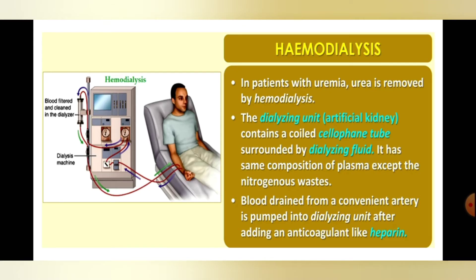Now, what is hemodialysis or dialysis? It is the process where purification of impure blood is done using a dialyzing unit, in persons who have kidney failure. 'Hemo' means blood; dialysis means clearing or cleaning of the blood. In patients with uremia — a condition where urea remains in the blood — urea is removed by hemodialysis.